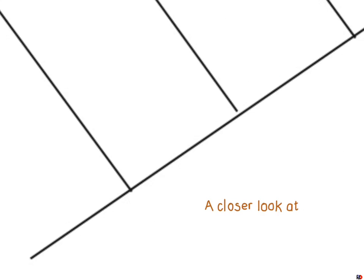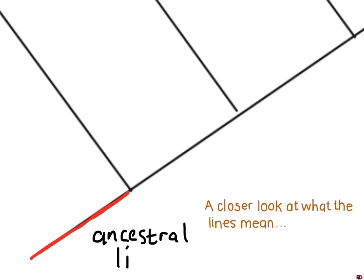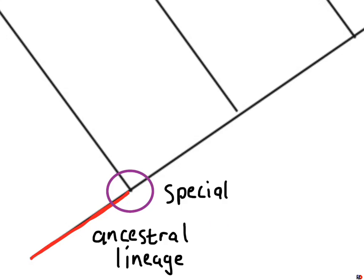Understanding a phylogeny is a lot like reading a family tree, but quite different. If you take a close look at what the lines mean: the bottom, what is often called the root, is really representing the ancestral lineage. Wherever a line splits into two or more, what you're actually seeing represented there is a speciation event.